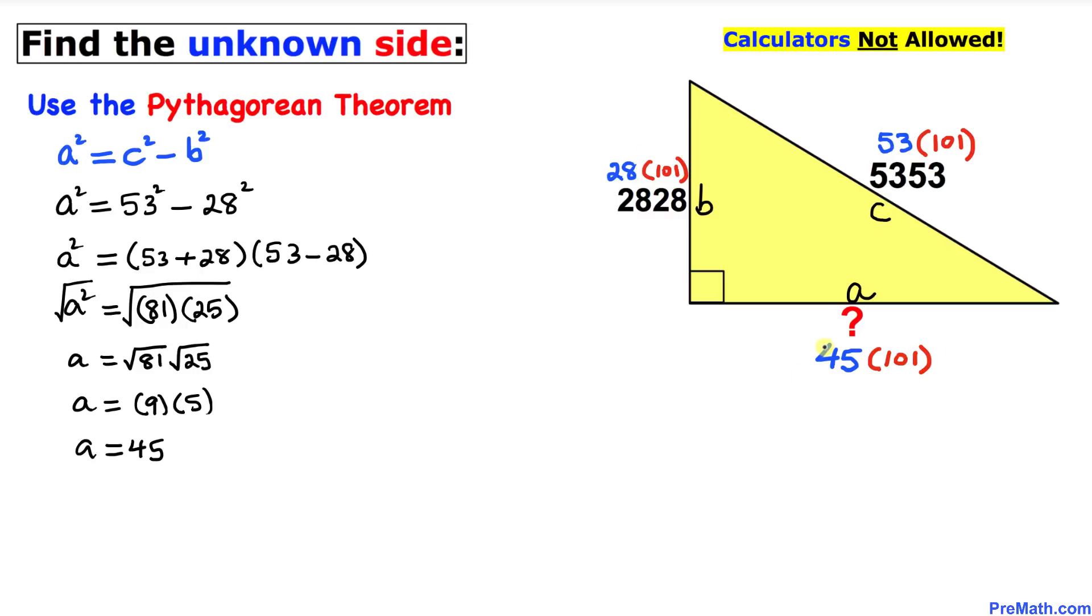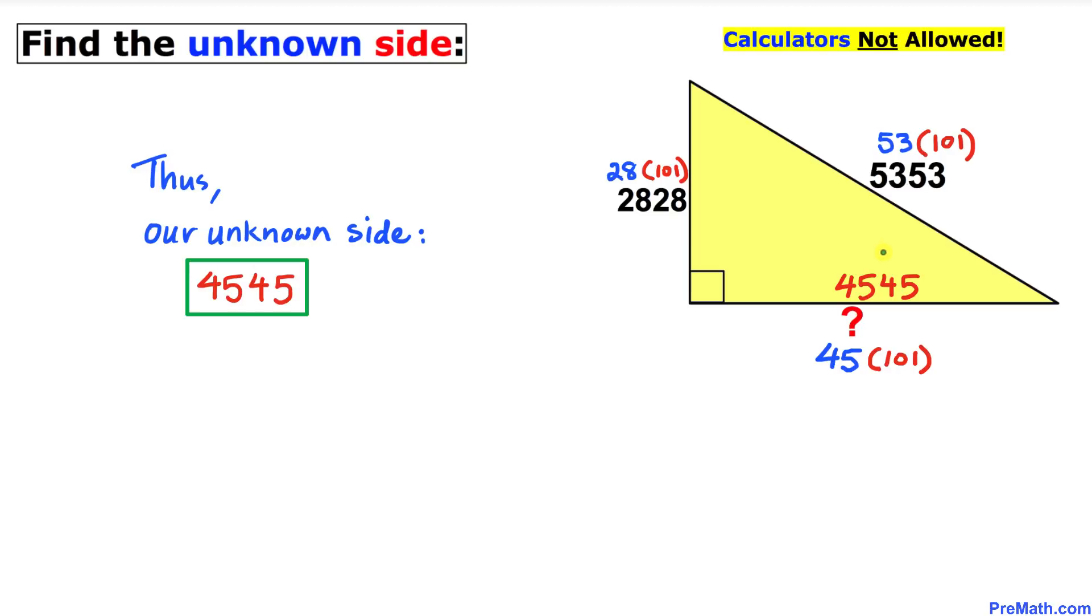Now, if we multiply this 45 times 101, that is going to give us 4545, and that is our side a value. So thus, our unknown side value turns out to be 4545, and that's our final answer.